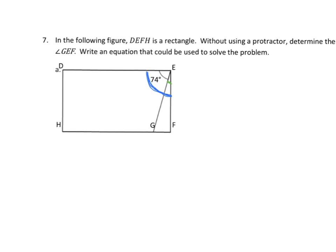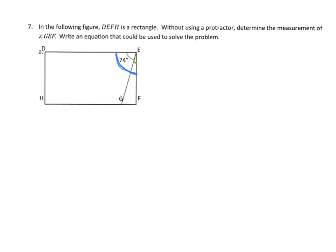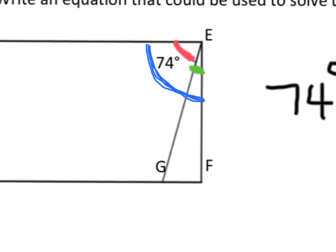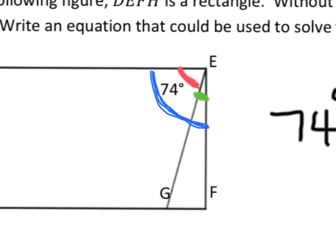So now we can write our equation: 74 degrees plus that mystery angle x equals 90 degrees. That's saying this red piece, which is 74 degrees, plus this green piece—you can barely see it so I'll zoom in—the red piece plus the green piece equals 90 degrees.